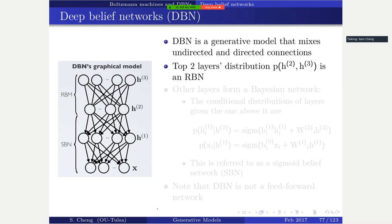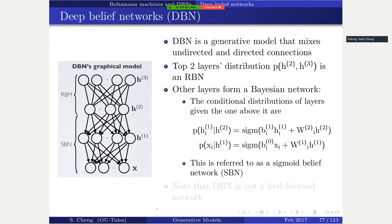One reason we discuss RBM is its historical importance: it was used to train the Deep Belief Network (DBN), the first successful deep learning model, around 2006-2007. The DBN is itself a generative model with an interesting structure - the first two layers form a Boltzmann machine.